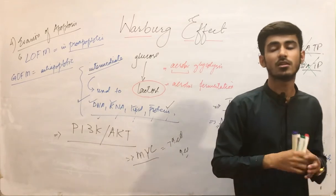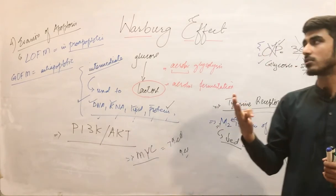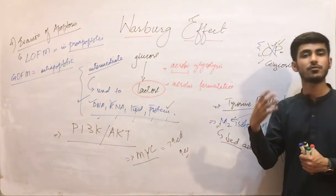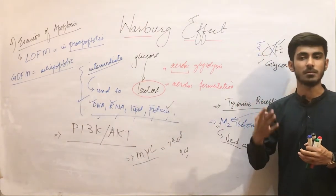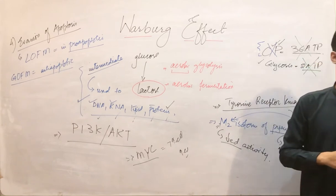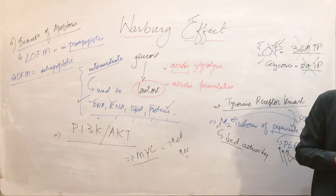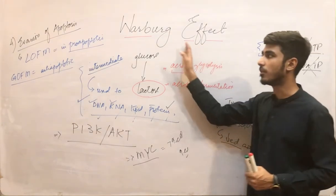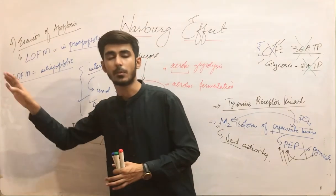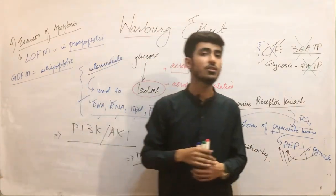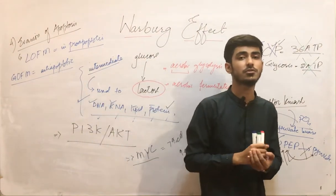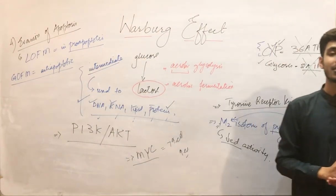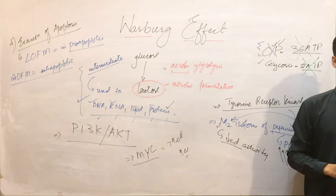So these are four hallmarks of cancer. Four more hallmarks remain and we will be discussing them in further lectures. This is all about the Warburg effect and the evasion of apoptosis. If you have any query or confusion, you can ask in the comment section. Thank you so much. Allah Hafiz.